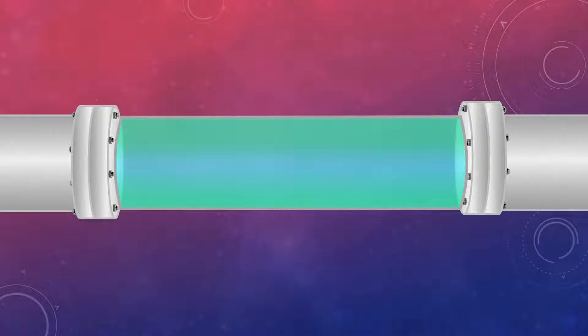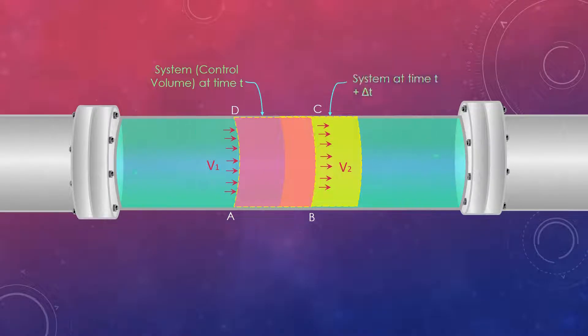Consider a fluid flowing uniformly from left to right through a pipe. At time t we choose the control volume ABCD which is also the system at this time. During the time interval delta t the system moves in the flow direction at uniform speeds v1 at section 1 and v2 at section 2. The system at this latter time is indicated by A dash B dash C dash D dash.